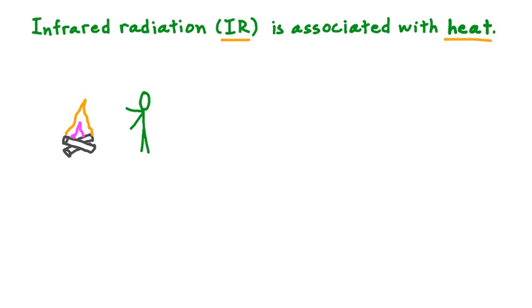Imagine that you're standing by a campfire, warming yourself. Looking at this campfire, we know that it gives off visible light — that's the light we can see from the flame. But as we stand fairly close to this campfire, we can also feel the heat that the fire gives off. That heat is not due to the visible light, the yellow and red colors we're seeing in the flame, but rather it's due to the infrared radiation given off by the fire. So we can see that visible light and infrared radiation are not the same thing.